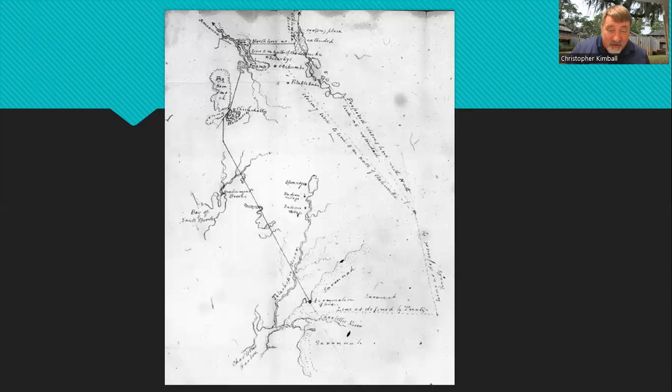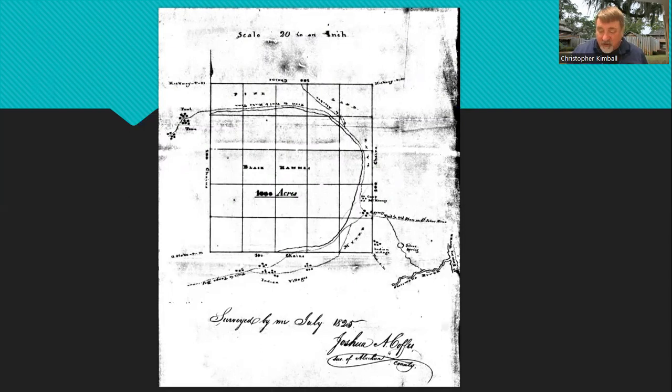Captain Dade recommended they establish a fort near the Indian agency that they established at the Northern Reservation, which General Clinch agreed and recommended as well. The Indian agency was established near what's today Ocala and they built a military road from Tampa Bay to the Indian agency, what they called the Fort King Road later on. Captain Francis Dade would assist on the construction of that road they'd be killed on 10 years later.